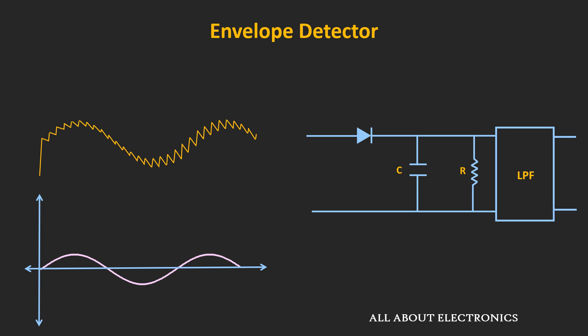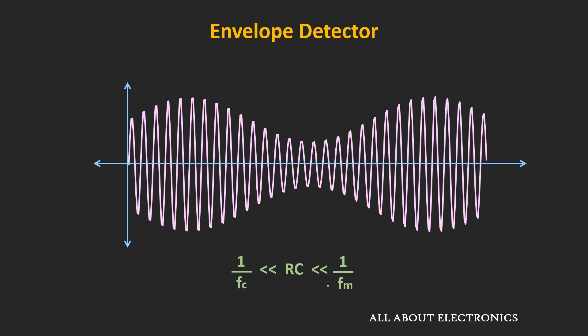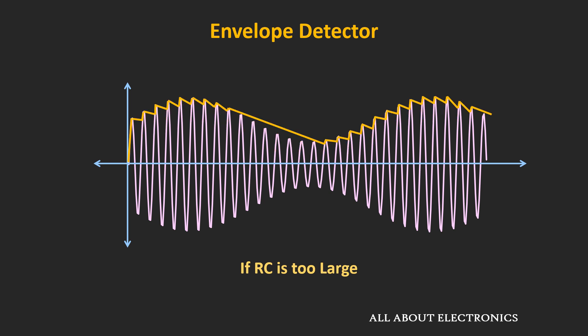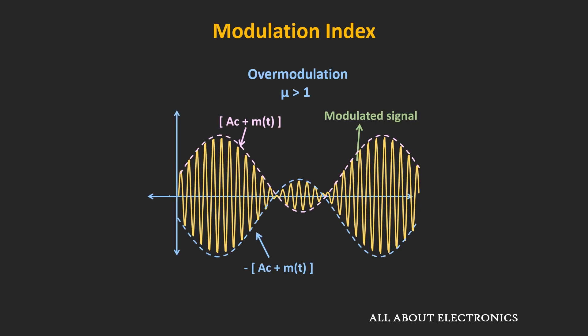This envelope detector works perfectly when the carrier signal frequency is much greater than the message signal frequency — that is, when FC is much greater than FM. Moreover, the value of R and C should be selected carefully. The RC time constant should be greater than 1/FC and less than 1/FM. If the RC time constant is too small, the capacitor will discharge rapidly and we will see more ripple in the output. On the other end, if RC is too large, the capacitor will take longer to discharge and may not be able to follow the envelope. The modulation index of the AM signal should also be less than 1.